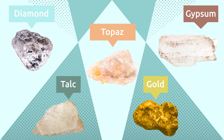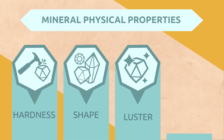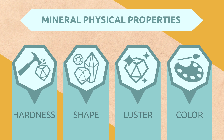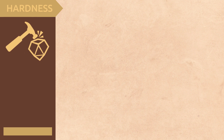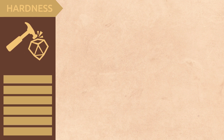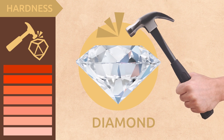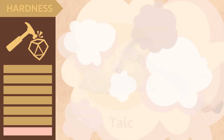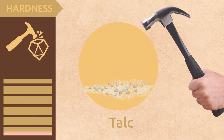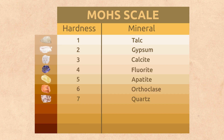Minerals have the following physical properties: hardness, shape, luster, and color. Hardness — hard minerals are very difficult to scratch or break. Diamonds are very hard minerals, but talc is a soft mineral. The Mohs scale describes 10 minerals based on their hardness, arranging them from softest to hardest.